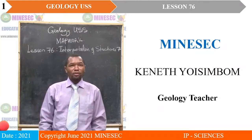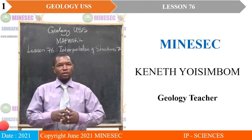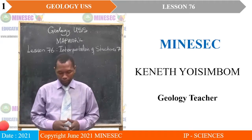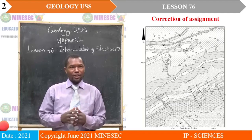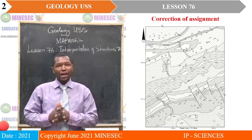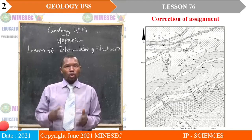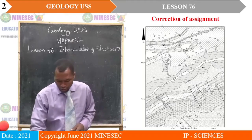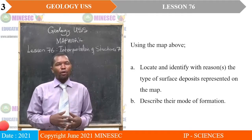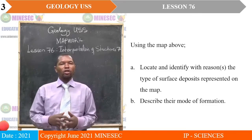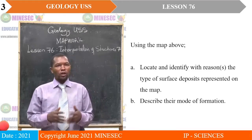Welcome to lesson 76 of your distance learning session for Upper Sixth Science Geology with Kenneth Yosinbong. During our lesson 75, we had an assignment. We shall now proceed to do the correction of the assignment. We are given a map to work with at home and asked to answer these questions: locate and identify with reasons the type of surface deposits represented on the map, and describe the mode of formation of those deposits.